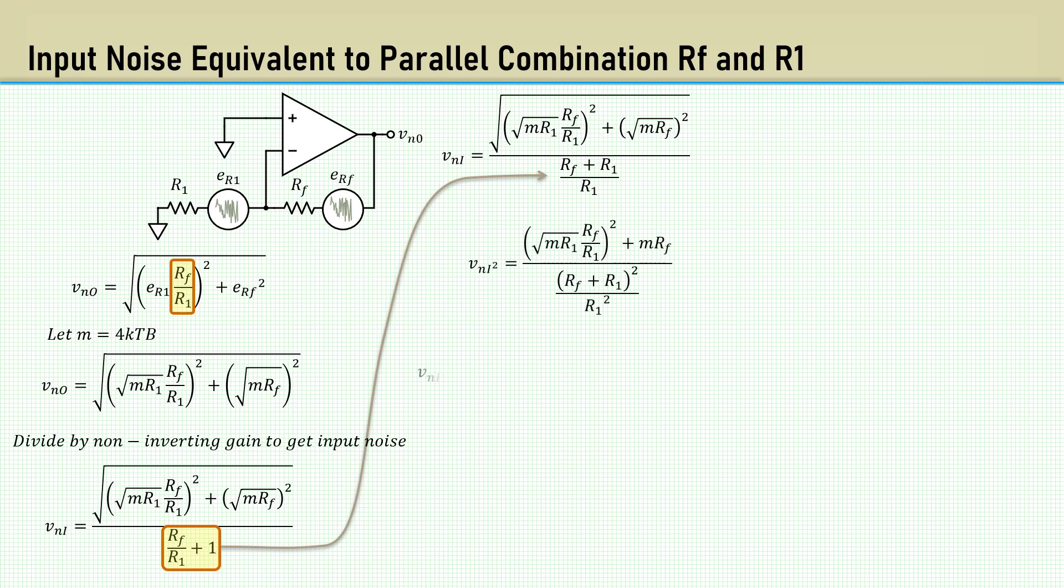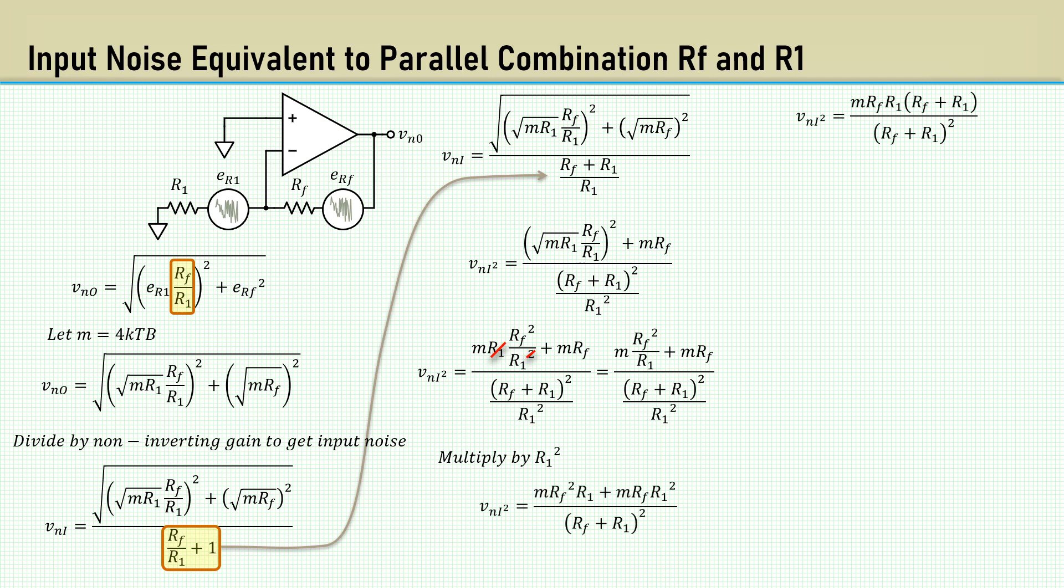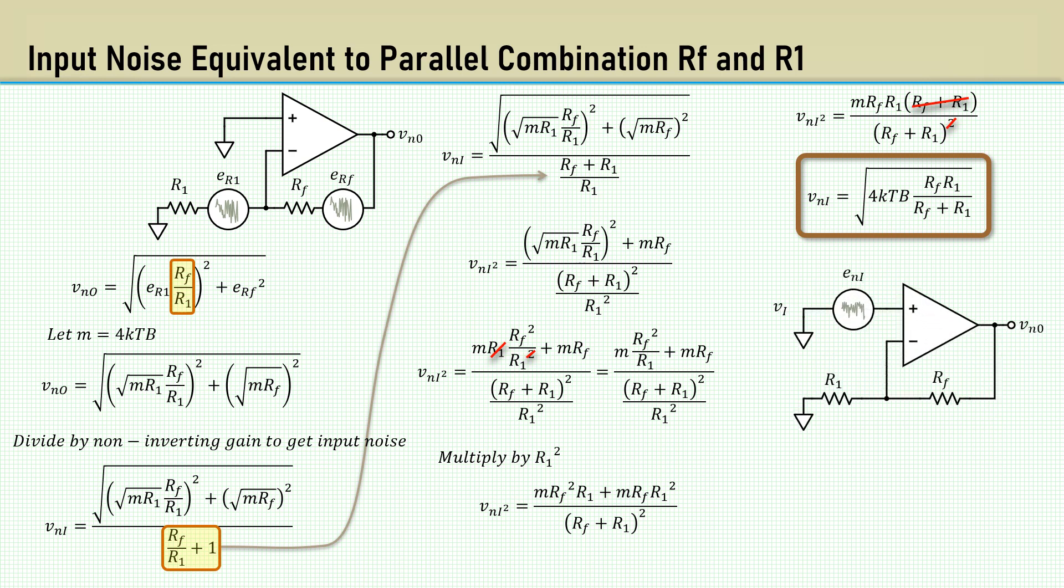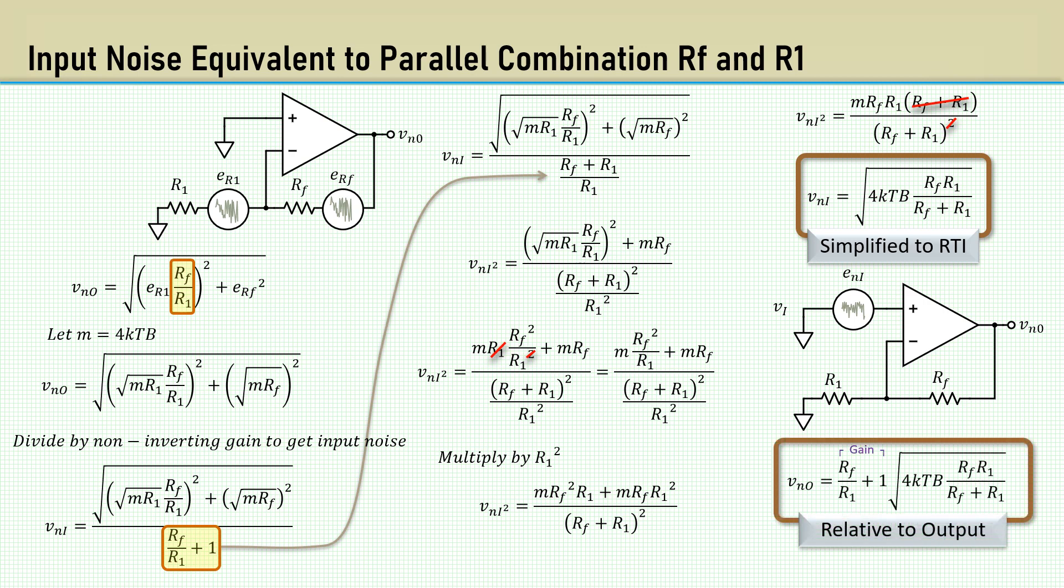This simplifies to a noise source going into the non-inverting input, which is relative to the input. Simply multiply by the non-inverting gain to get the noise relative to the output.